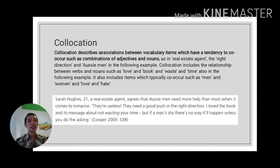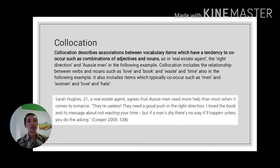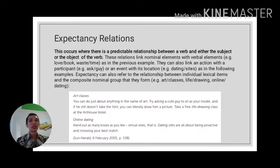The last discussion for today's video is about collocations as part of creating cohesion inside the text. Collocation describes associations between vocabulary items which have a tendency to co-occur, such as combinations of adjectives and nouns. For example, 'real estate agents' — 'real estate' usually co-occurs together. Other examples include 'love and hate' and 'black and white.' When a text includes words that habitually appear together, this supports cohesion.